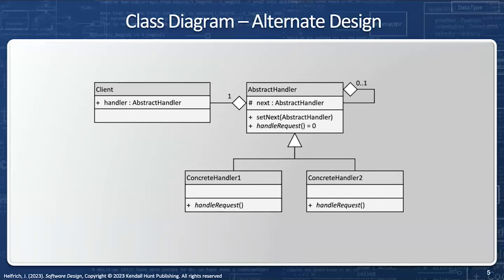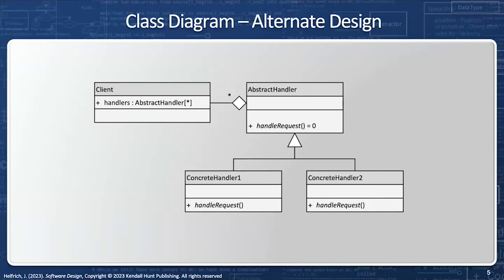It turns out there's another easier way to do this. Instead of the client having a single pointer to the abstract handler, I can instead have a collection of abstract handlers. So the client will have many handlers by aggregation rather than one. The abstract handler will not have a pointer to the next abstract handler — in fact, it will have nothing at all — and we also get rid of set_next. The key is that handle_request now returns a bool. I loop through all the abstract handlers in the collection, and if it ever returns true, I stop there rather than move on to the next.